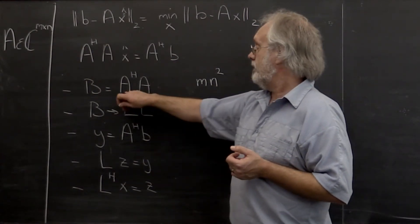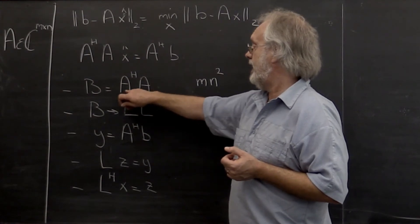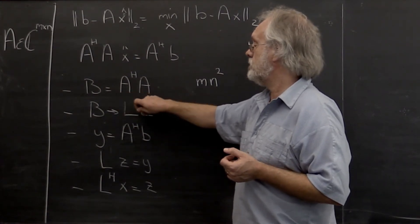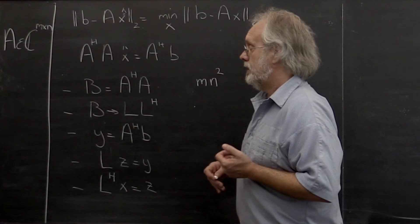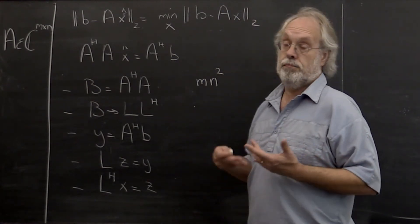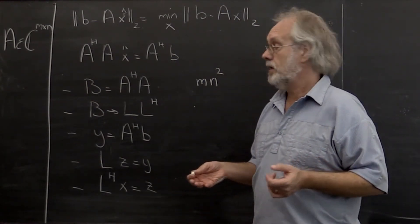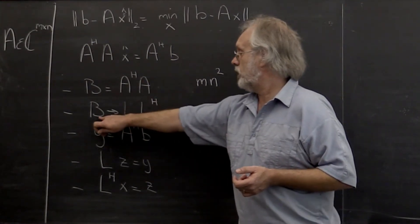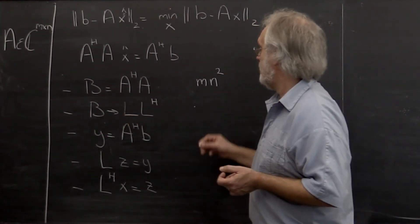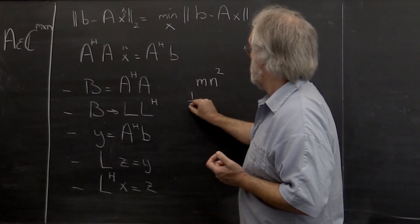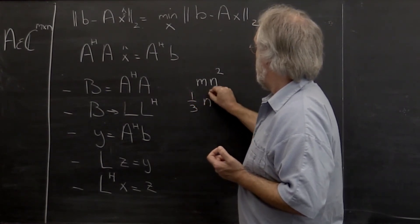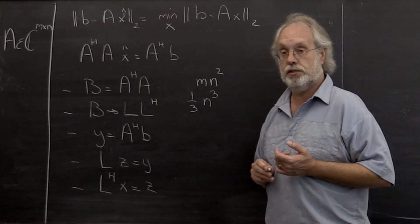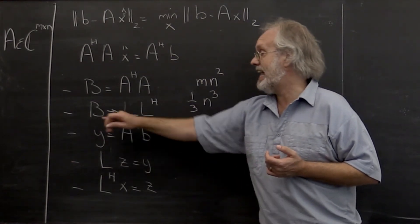Now, we have shown that if A has linearly independent columns, then B is a Hermitian positive definite matrix. And therefore, we can use the Cholesky factorization. So we can compute its Cholesky factorization, and we've seen that that requires one-third n³ floating point operations, because B is n by n.